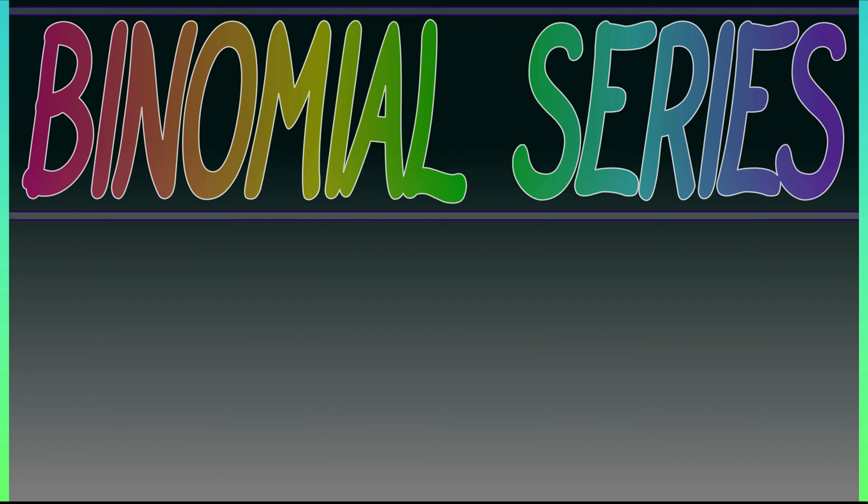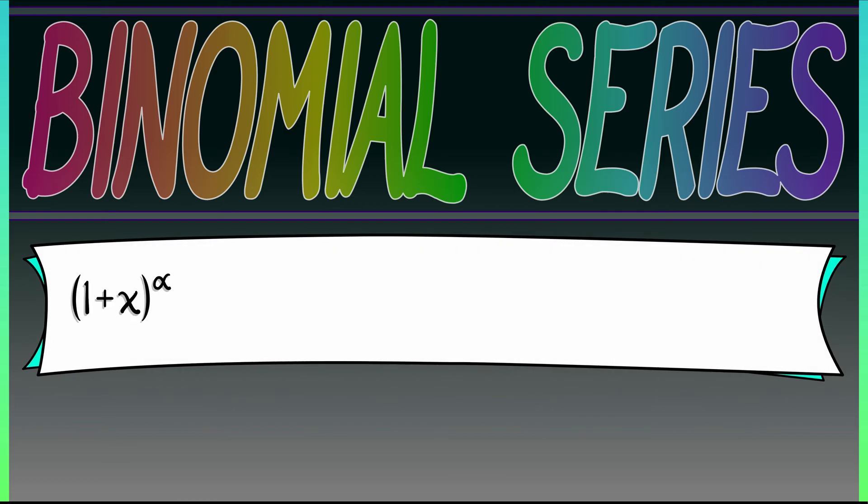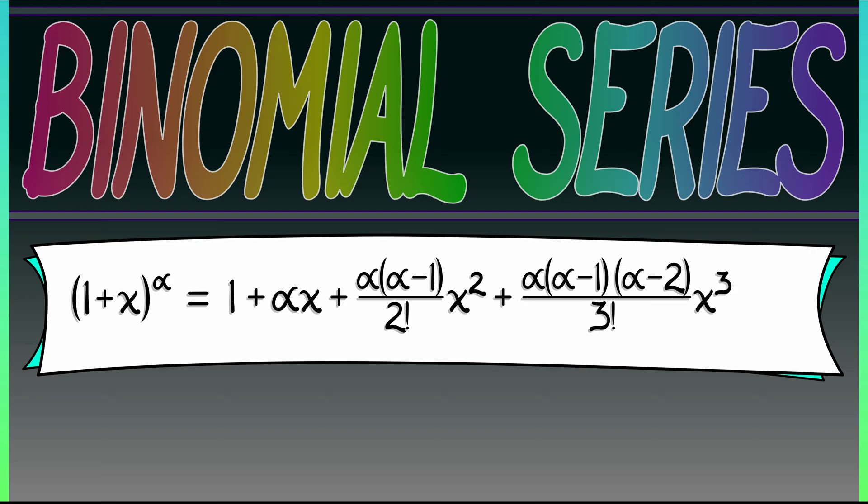Now, maybe you've seen this guy before, maybe you haven't. Here it is: quantity 1 plus x to the alpha is 1 plus alpha times x plus alpha times alpha minus 1 divided by 2 factorial times x squared plus alpha times alpha minus 1 times alpha minus 2 divided by 3 factorial times x cubed, and you keep going and going following the obvious pattern.